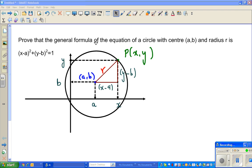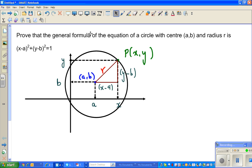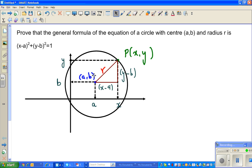Hello friends, in this video I'm going to prove the equation of a circle with center (a,b) and radius r is this formula: (x-a)² + (y-b)² = r². It's pretty simple.